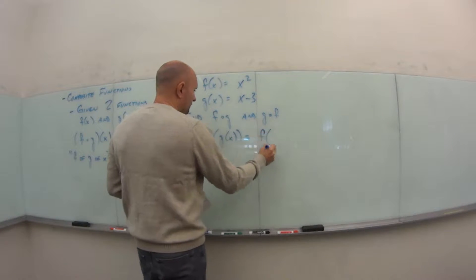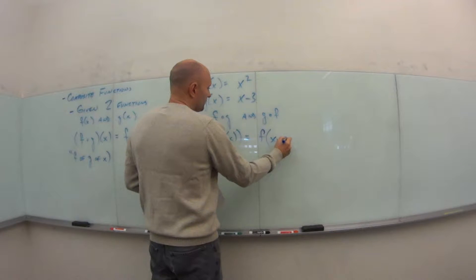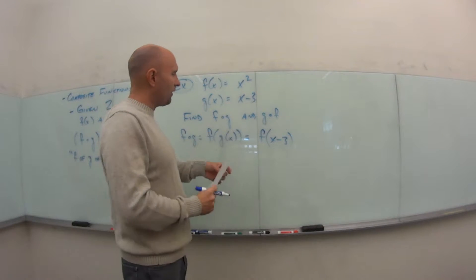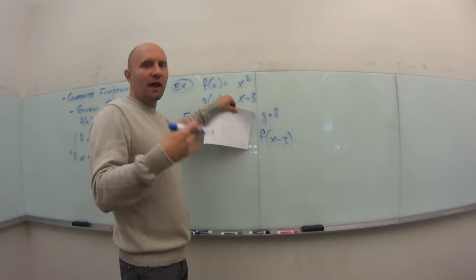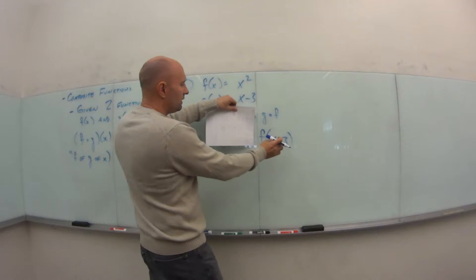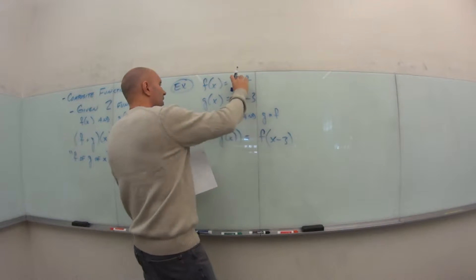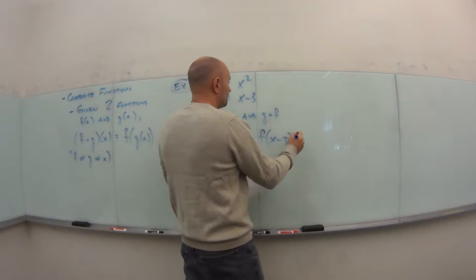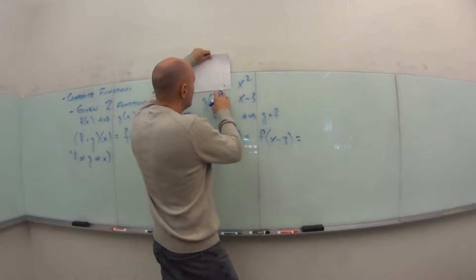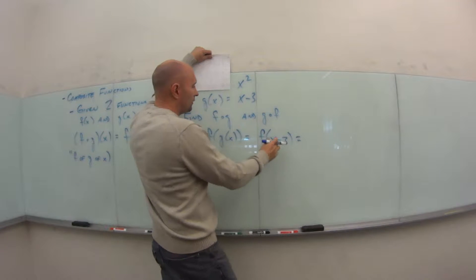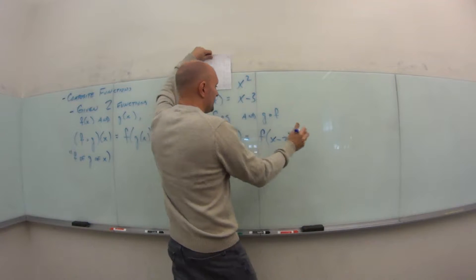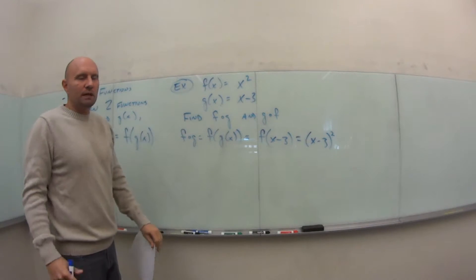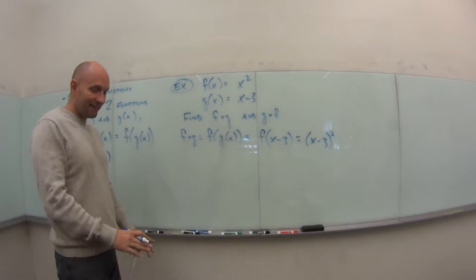So f of g of x means f of (x − 3), since g is x − 3. Just as if I asked what's f(x − 3) — you'd take x − 3 and plug it in anywhere you had an x. Our f function is x squared, so we plug x − 3 in anywhere we have an x, giving us (x − 3) squared. That's it.